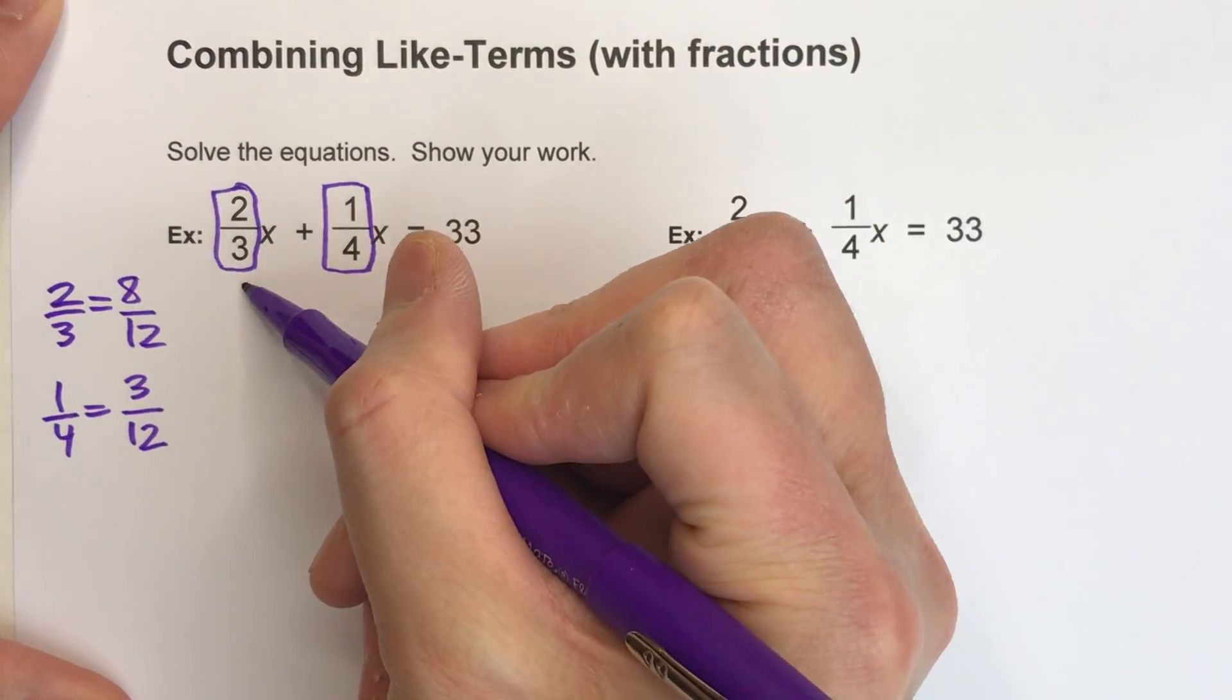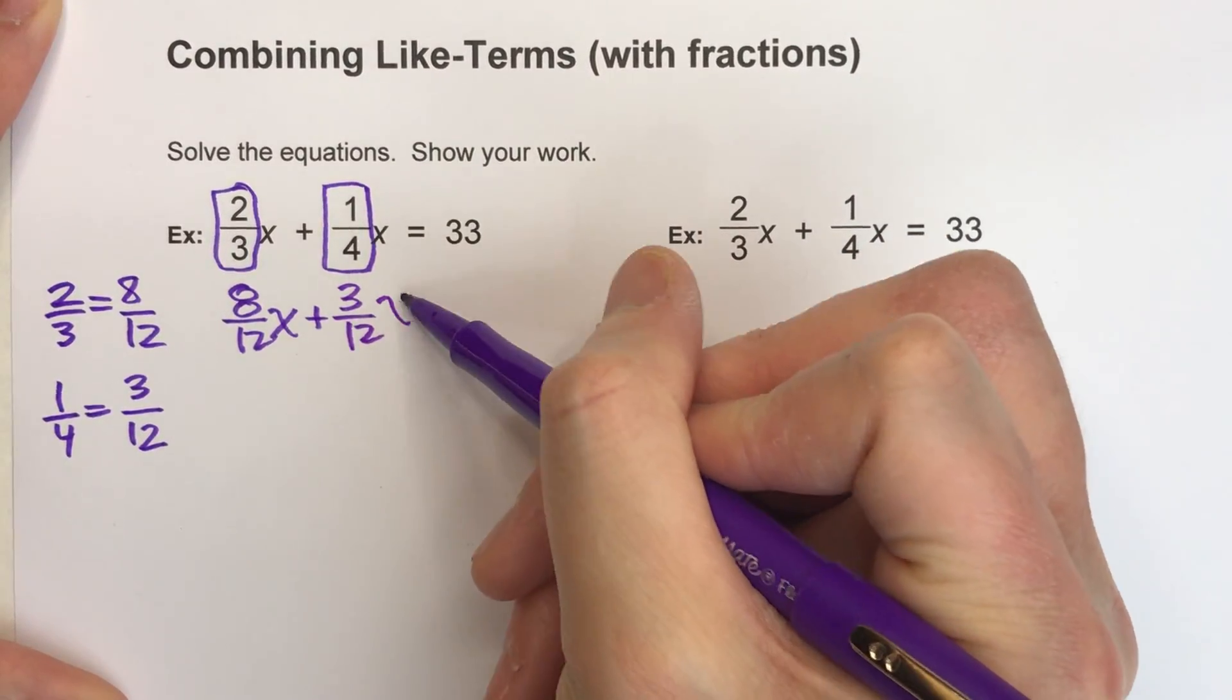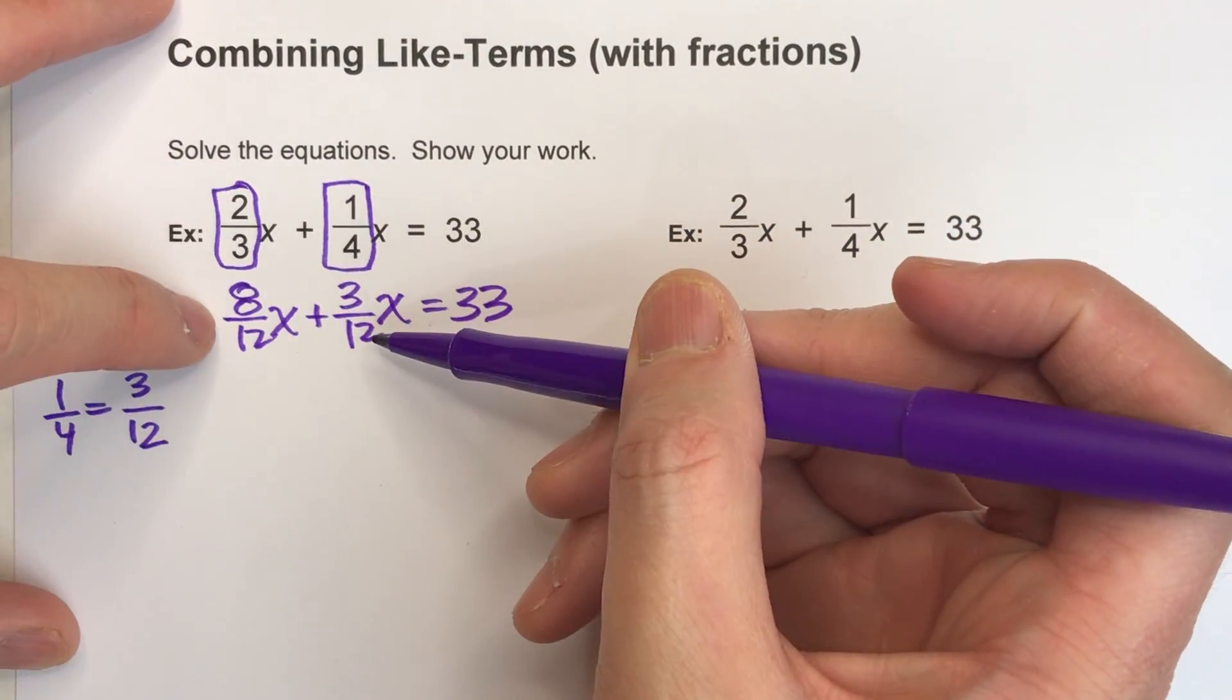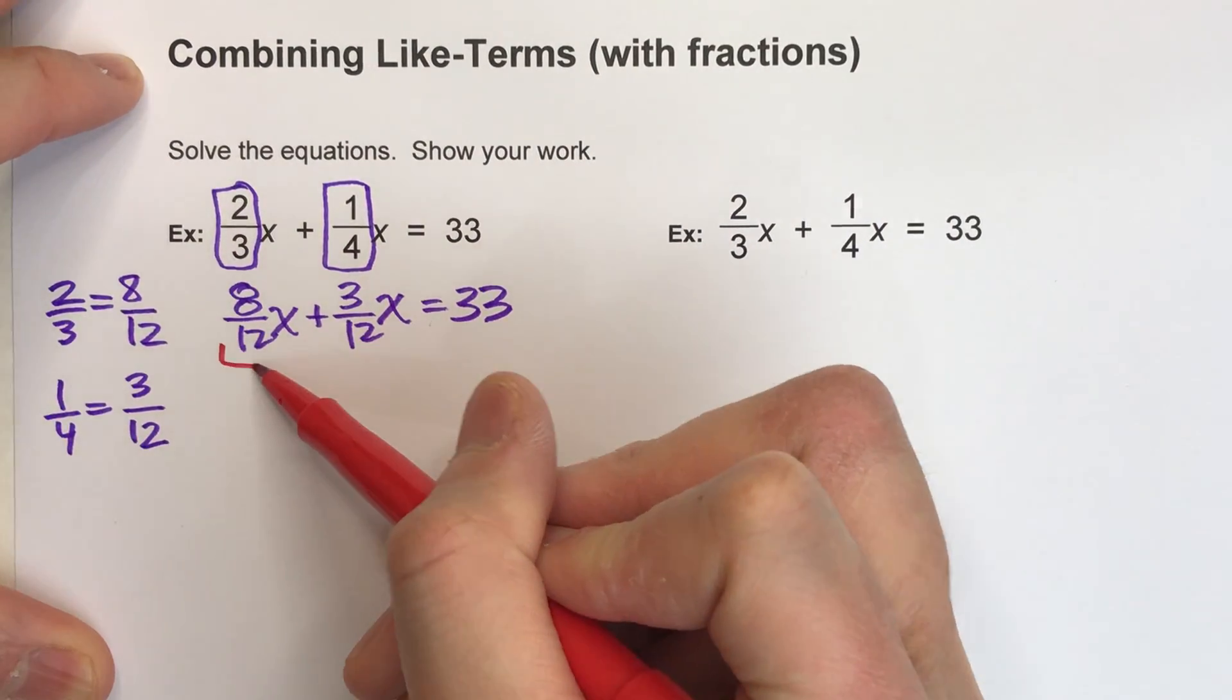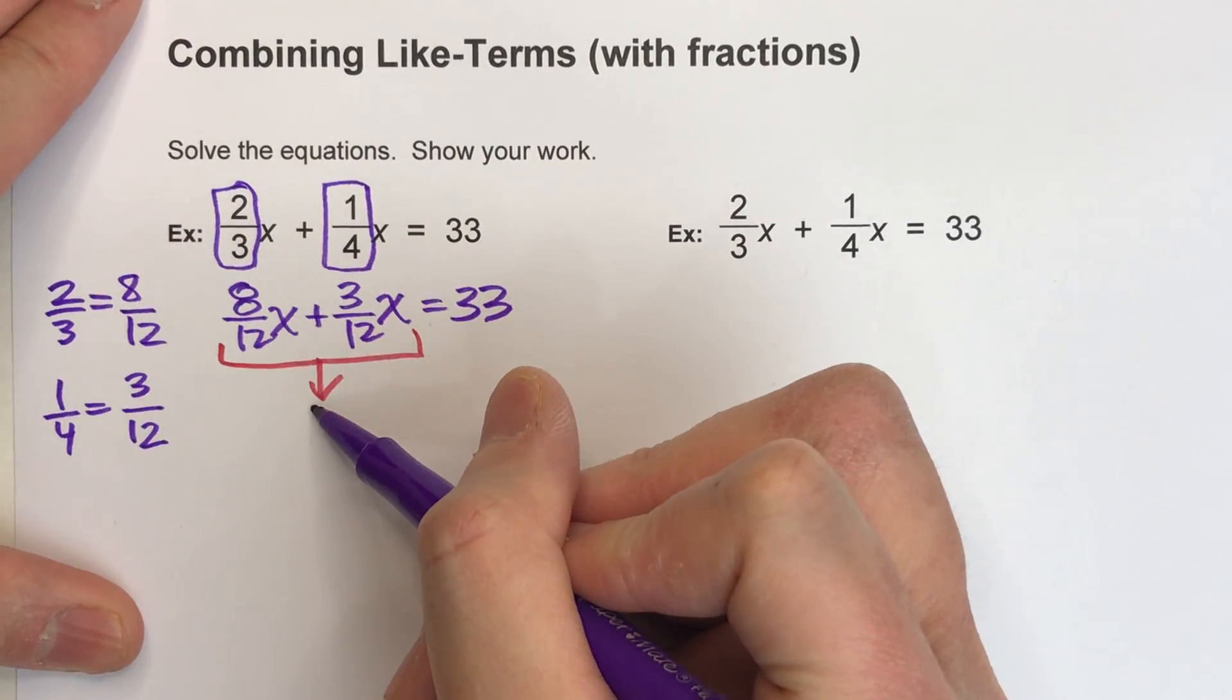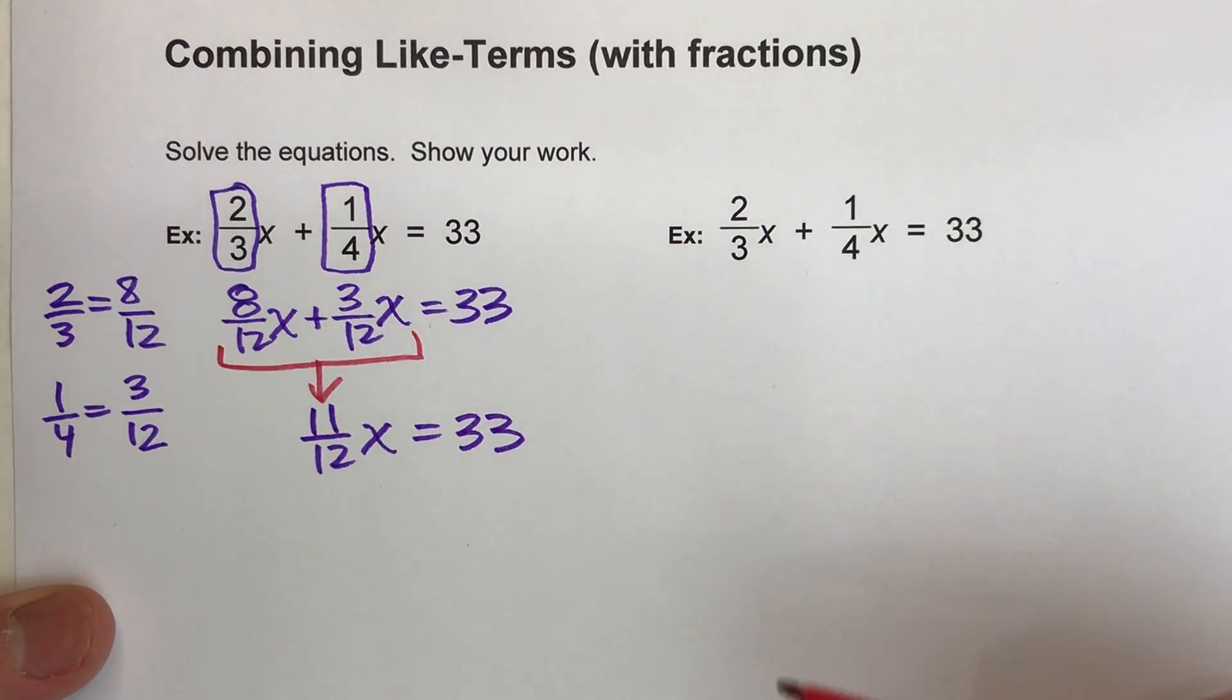And now I can rewrite this equation as, instead of 2/3x, I'll use 8/12x, plus instead of 1/4x, I'll use 3/12x, and then I'll drop down my equals 33. So all I've done here is rewritten the equation with the fractions in common denominator form, because now I can actually combine my like terms. But now that I've done that, now I can solve this.